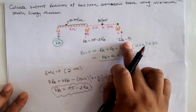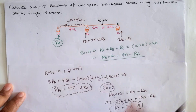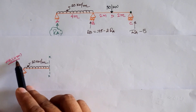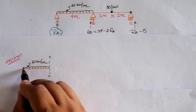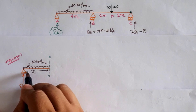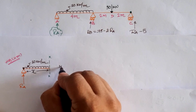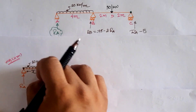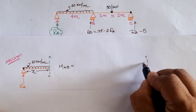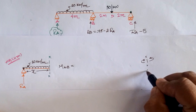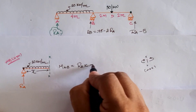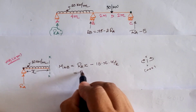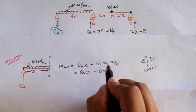Using these support reactions, we find the moment in each section. For the section A to B, with total length 4 meters, assuming A as origin and sectional distance X: due to Ra, the moment Ra·X is clockwise and positive by our sign convention. Due to the 10 kN/m UDL, it is 10·X·(X/2) anticlockwise and negative. So the total moment in span A to B is Ra·X − 5X².